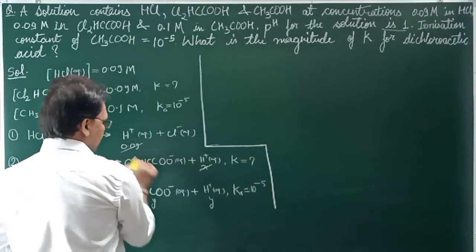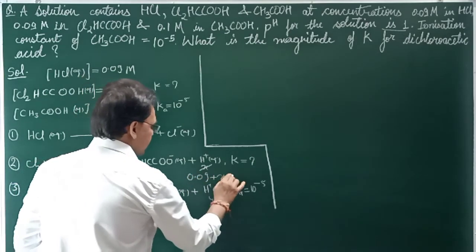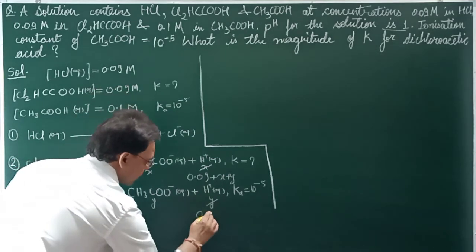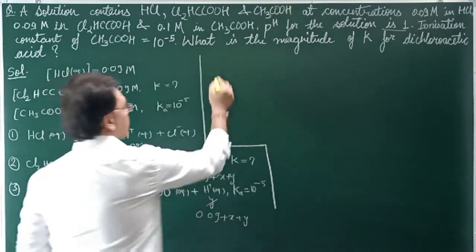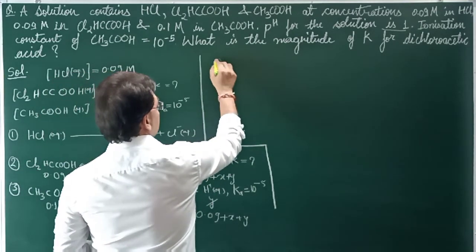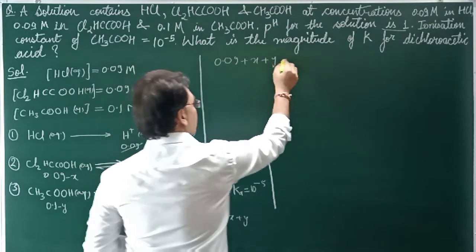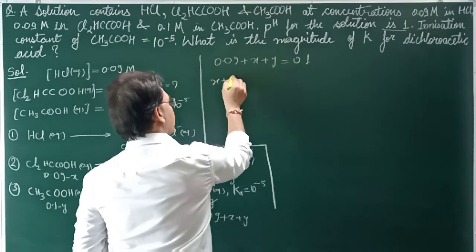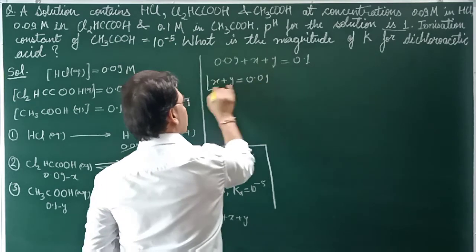The total concentration of H⁺ in the solution becomes 0.09 + x + y, where x is from Dichloroacetic Acid and y is from CH₃COOH. Since pH = 1, we have 0.09 + x + y = 0.1, which gives us x + y = 0.01.